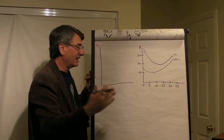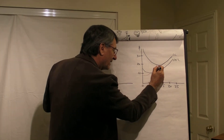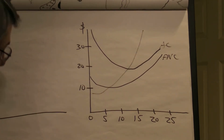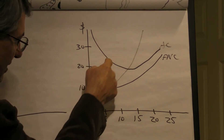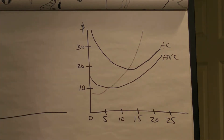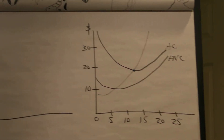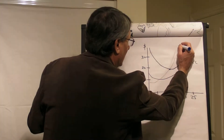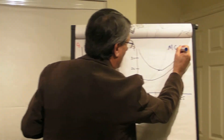And this little curve right here that catches each of them at their bottom — when the average is decreasing, this curve is below it. When the average is increasing, this curve is above it. And when the average is neither increasing nor decreasing, they're equal. What is this? Which graph is it? Marginal cost, of course.